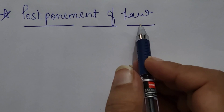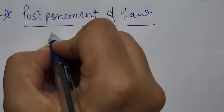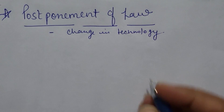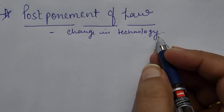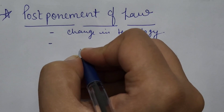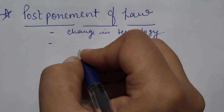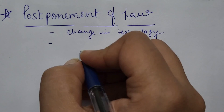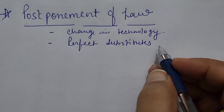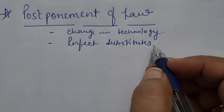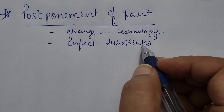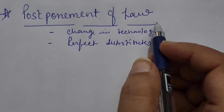Postponement of law: the law of variable proportions would be postponed in two cases. First, if there is a change in technology — if technology changes, then this law will not be operationalized and production can be increased. Second, if there is a situation where fixity of factor doesn't exist — meaning if your inputs are perfect substitutes, in that case also production will keep increasing and diminishing returns to factor will not activate. So in these two cases — if technology changes or if inputs are perfect substitutes — this law will not operate.